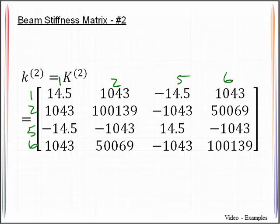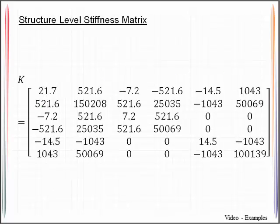The last thing we need to do to generate the structure level stiffness matrix is to combine those two individual elements. Let me go ahead and label these. Then I would like to show you how we get at least one of these terms.